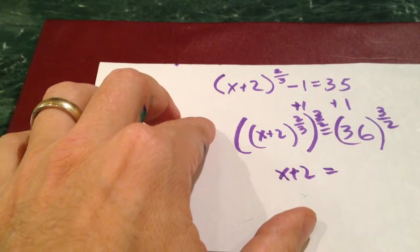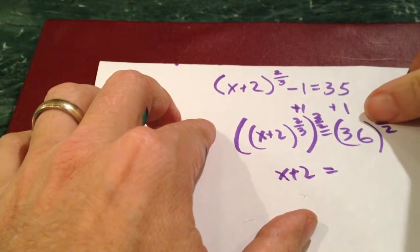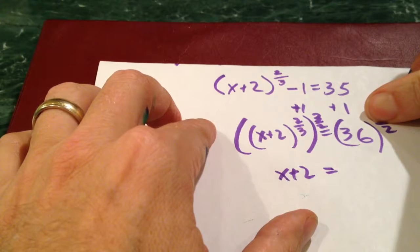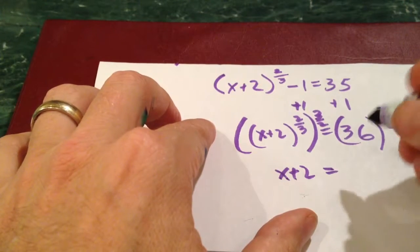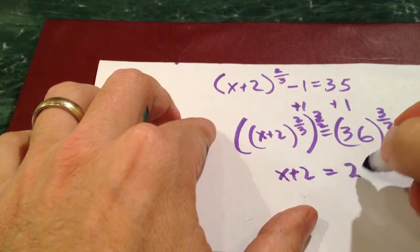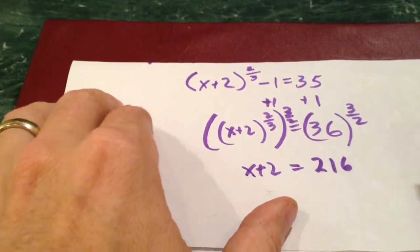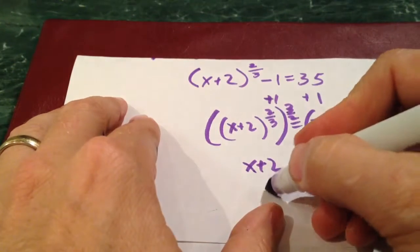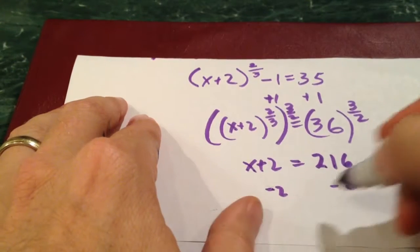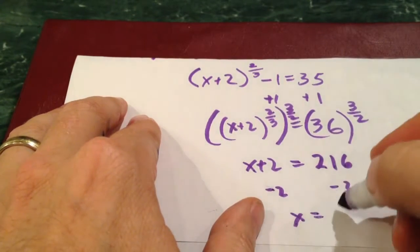And then this one, if I'm clever, I can say this is square root. Square root of 36 is 6, and then raise that to the third power. I might need a calculator for that. Or I happen to remember that's 216, at least I hope it is. Otherwise my answer is going to be wrong here. And then my last step is minus 2. And so that's 214.